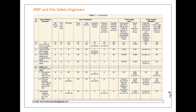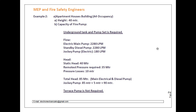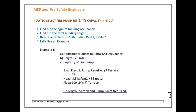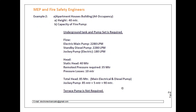The terrace pump capacity is 900 LPM — this is the flow. For the pressure or head, it is given that at the terrace tank level, a minimum pressure of 3.5 kg/cm² is required. So to summarize Example 1: one electrical pump is required at the terrace, with a head of 3.5 kg/cm² — that is equal to 35 meters — and a flow of 900 LPM. The underground water tank and pump are not required in this case.